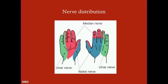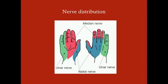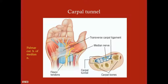The ulnar nerve is the nerve you feel when you hit your funny bone. The median nerve is between the ulnar and radial. Importantly, the median nerve supplies motor innervation to the thenar eminence — this is particularly relevant to carpal tunnel syndrome.